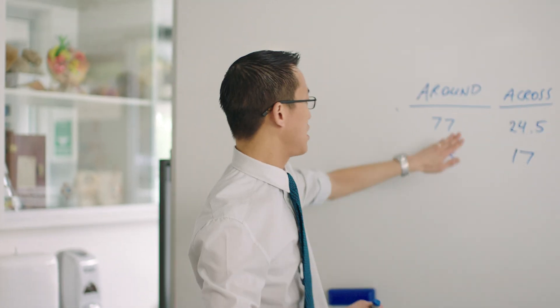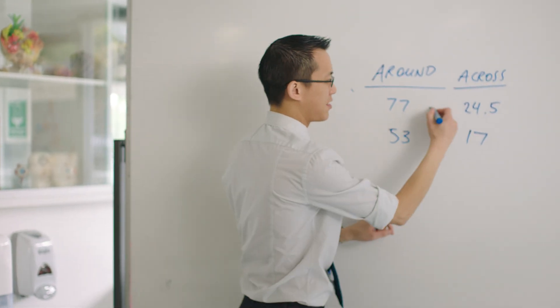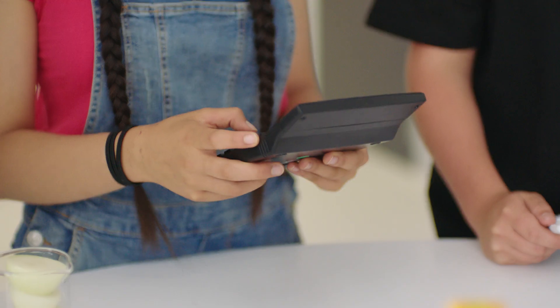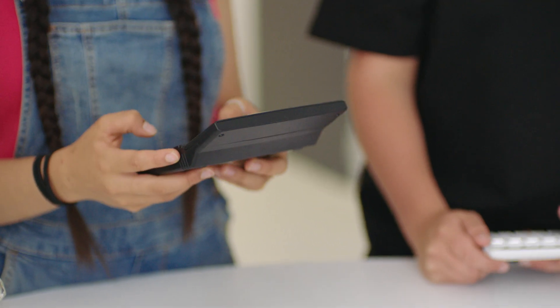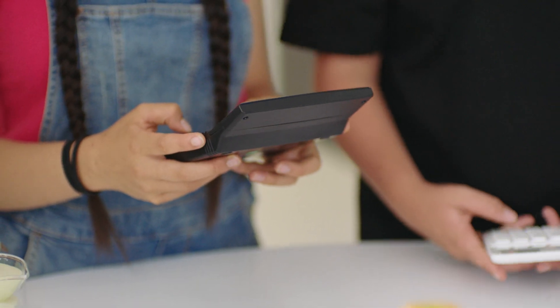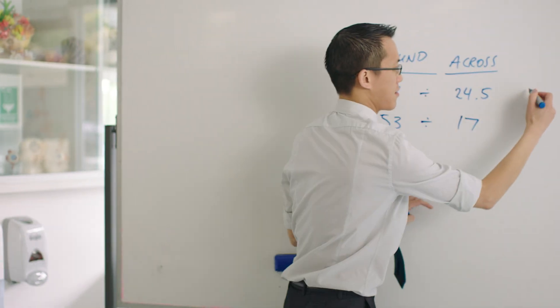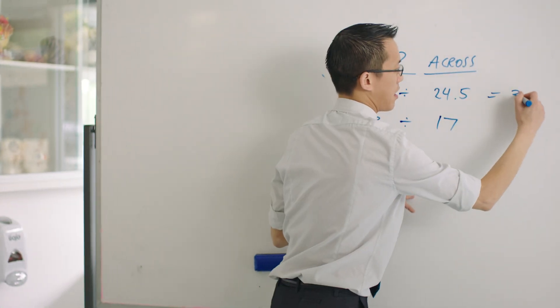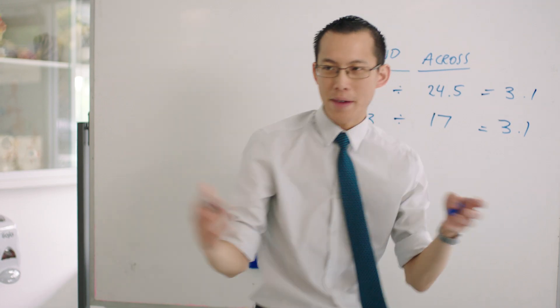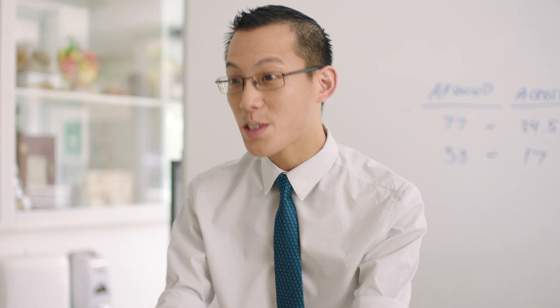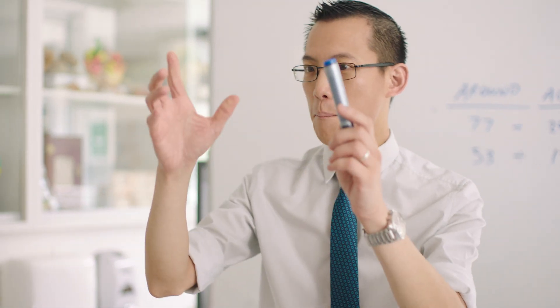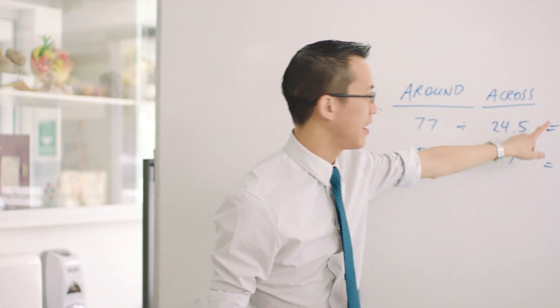Now I want you to grab these calculators. Maddie, you measured these two numbers — what I'd love you to do is divide them together. And Billie, can you do the same but for your numbers? 3.1. 3.1. And what about you, Billie? 3.1. Now hold on a second — we measured these different kinds of circles, different sizes, but we got this same pattern.